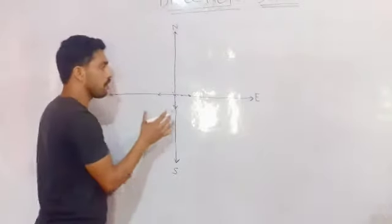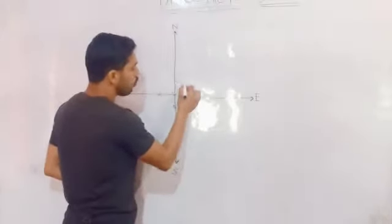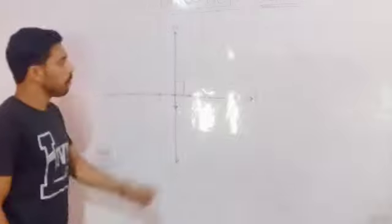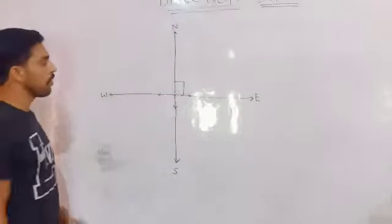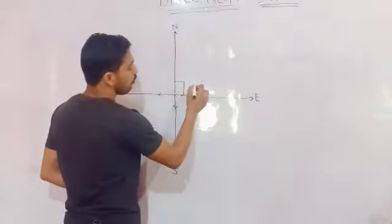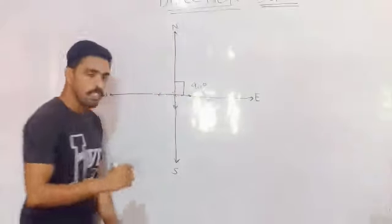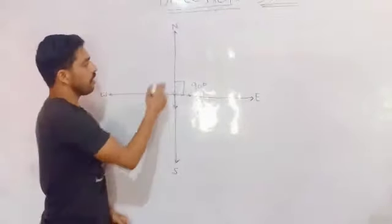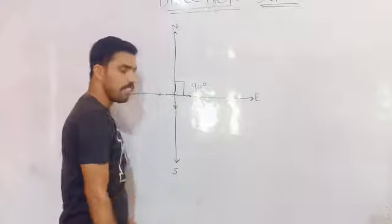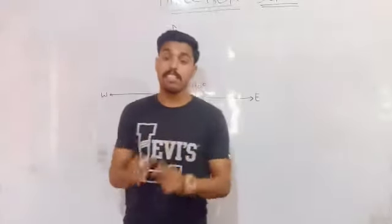North and East. Between the North and East direction, what about the angle? Straight angle. 90 degree. 90 degree.